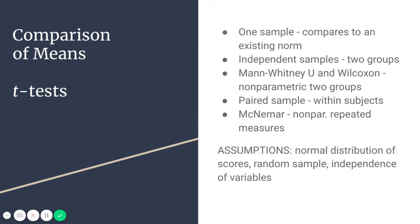The paired samples t-test looks at a within-subjects design, such as a pretest and post-test or a time series design, where each subject is compared with itself. If you have nonparametric data in your repeated measures, like a yes or no on a survey, you could use the McNemar test to compare groups. The assumptions here are normal distribution of scores, random sample, and independence of variables.